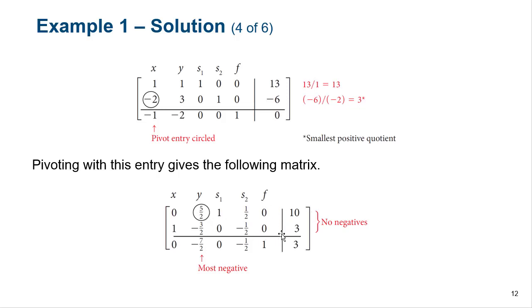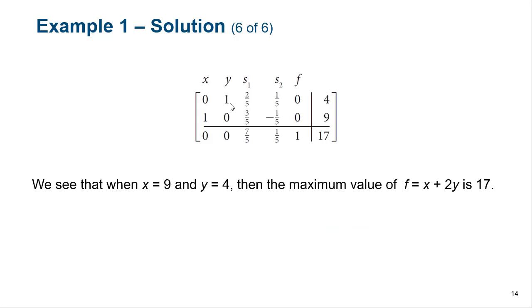We check our ratios again. Because this is a negative number, we immediately know this ratio is what we need — this gives us 4 and this gives us negative 2. We're looking for the smallest positive ratio, so we use this one. After pivoting on Y, we can see that we're done — no more negatives in the bottom row. We have a maximum value of 17 that occurs when X equals 9 and Y equals 4. Our slack variables will be zeros, so we're basically using up everything.